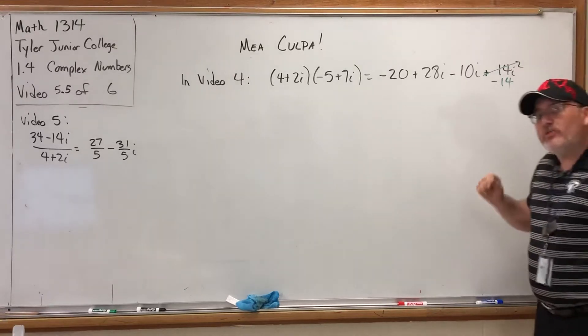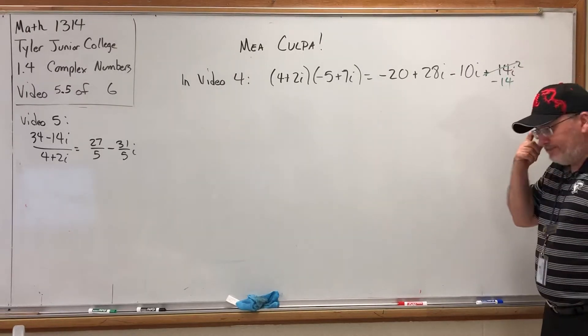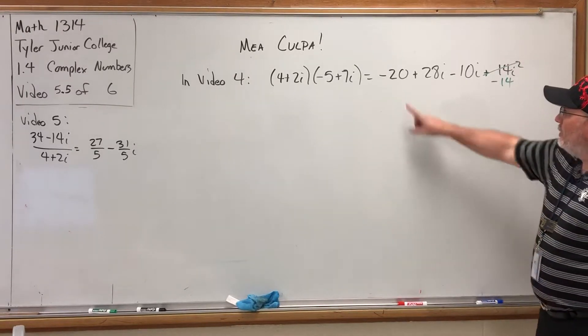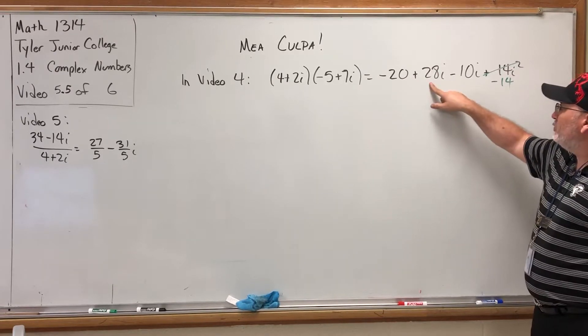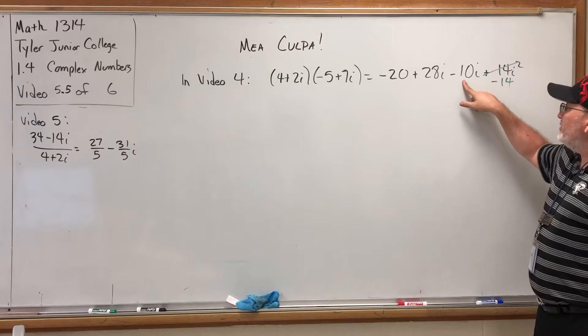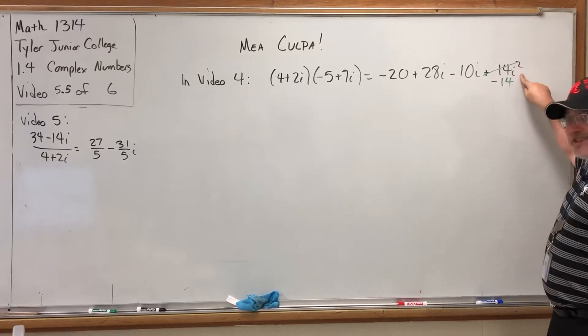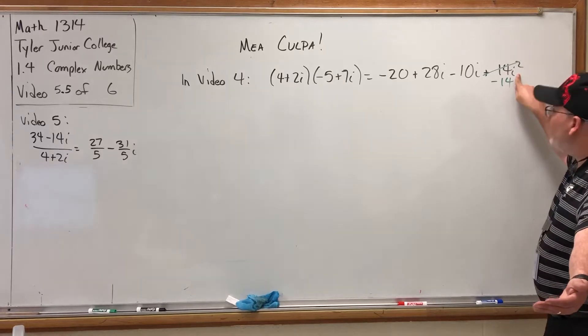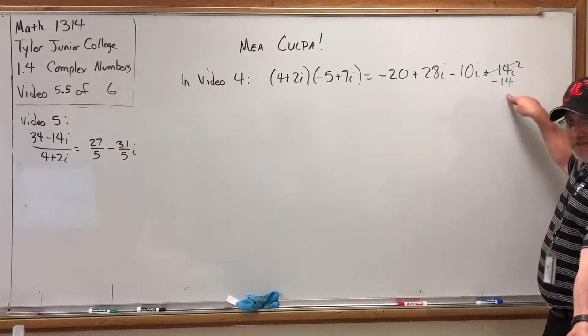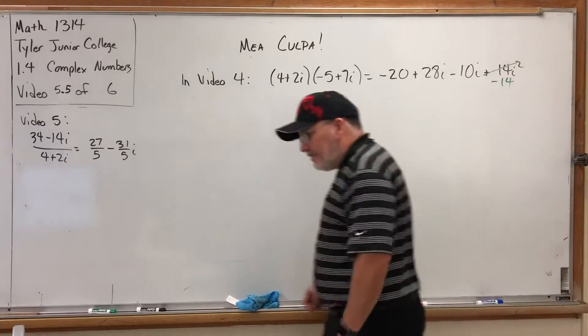It got FOILed out and everything went smooth until the next step. Just to recap, the First part of FOIL was -20, the Outer part was +28i, the Inner part was -10i, and the Last part was +14i². But i² equals -1, so we change it and get -14.